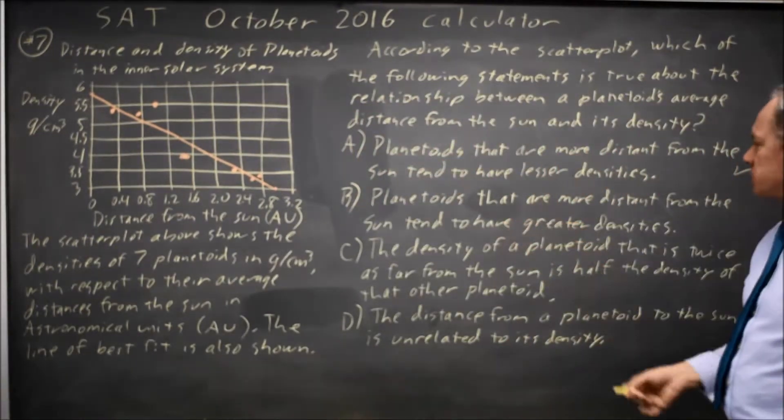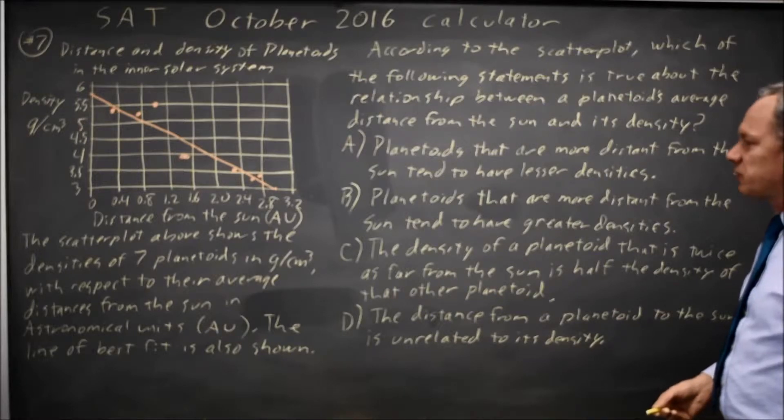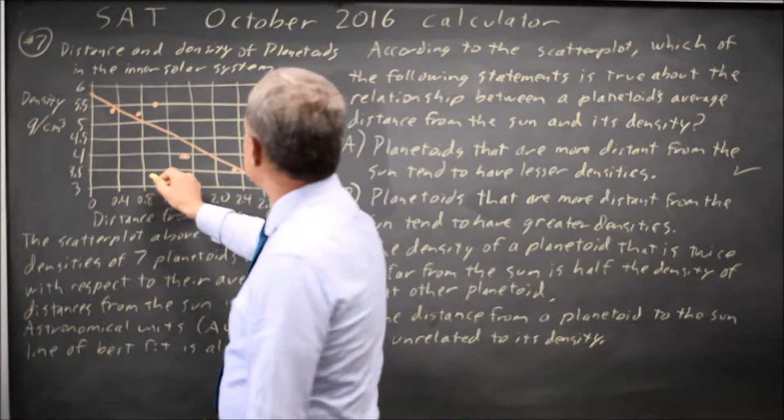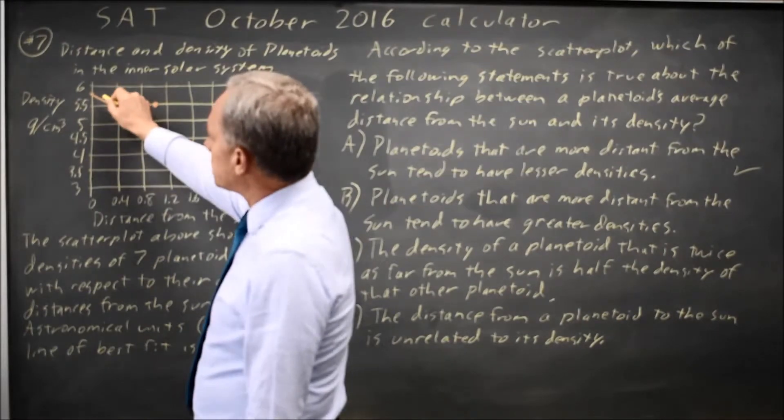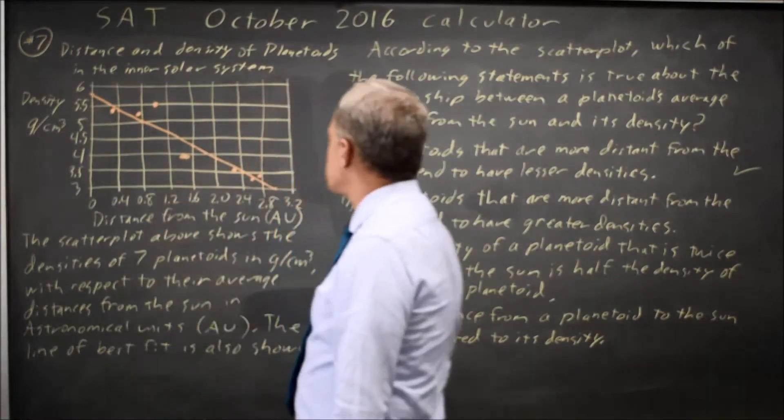Choice B, planetoids that are more distant from the sun tend to have greater densities. But no, as we get more distant from the sun, the density is decreasing, not increasing, which we saw when we considered choice A.